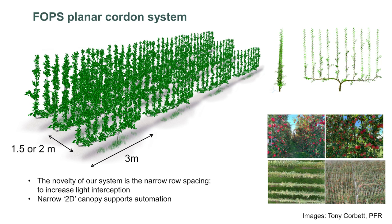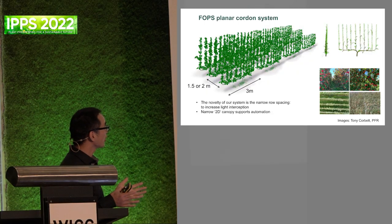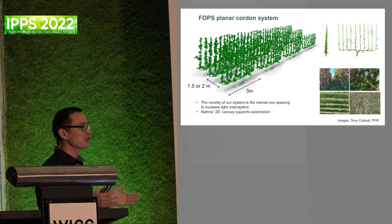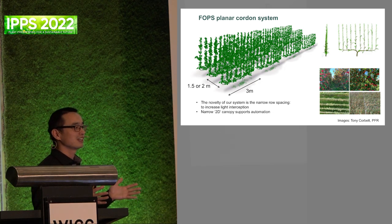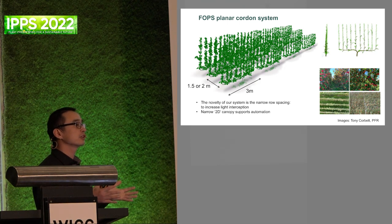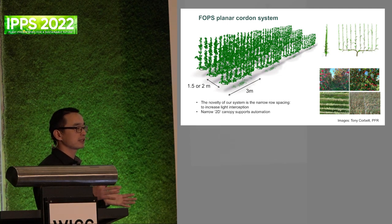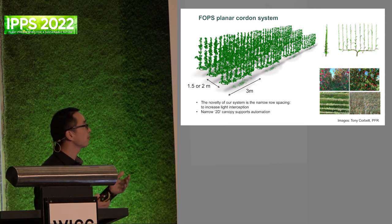The big advantage of this system is a very large yield advantage. It can increase the current yield of 35 tonnes per hectare to about 100 tonnes per hectare, and for some later harvesting varieties it can even reach 150 tonnes per hectare. Furthermore, it can increase the uniformity of fruit quality. Our field study suggests you can increase the first grade rate from 65 percent to 85 percent, which increases the farmer's income a lot.